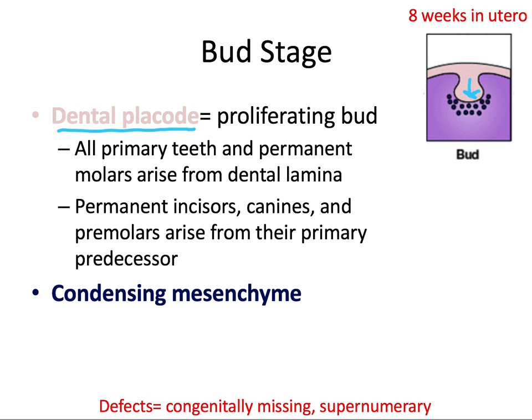All primary teeth and permanent molars arise directly from the dental lamina, just as the schematic shows. But permanent incisors, canines, and premolars arise from their primary predecessor — a secondary bud pinches off from the first bud and goes through the same stages to develop the permanent teeth, except for the molars. This makes sense because these are all succedaneous teeth, or teeth that eventually replace a primary tooth, whereas all primary teeth and permanent molars have no teeth they're replacing — they're the first ones in their respective regions to come into the mouth.